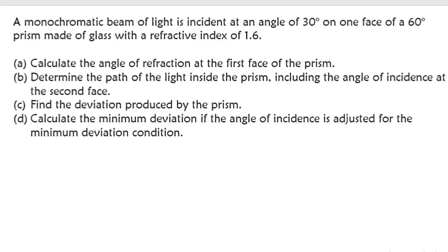Let's break down this question on light waves, which reads: a monochromatic beam of light is incident at an angle of 30 degrees on one face of a 60-degree prism made of glass with a refractive index of 1.6. Calculate the angle of refraction at the first face.